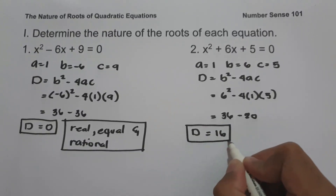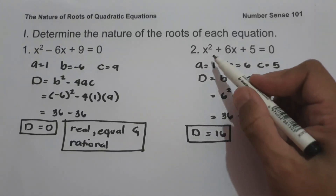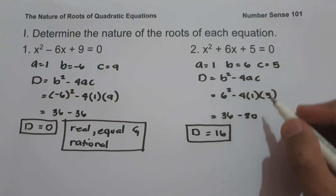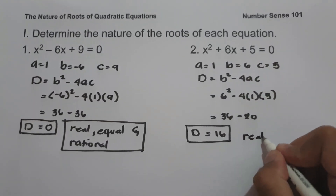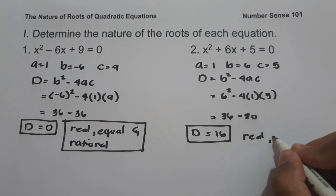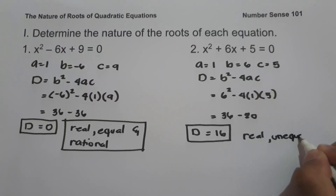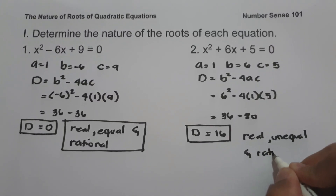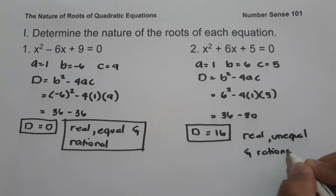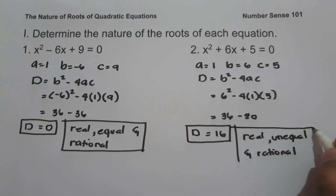Since the discriminant is a perfect square, the roots of x squared plus 6x plus 5 are real, unequal, and rational. And this will be our answer.